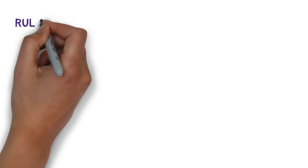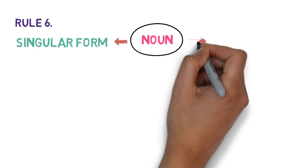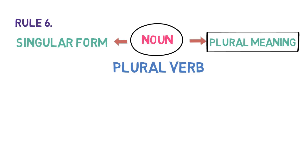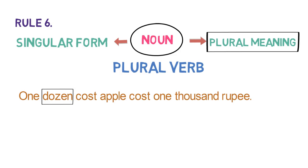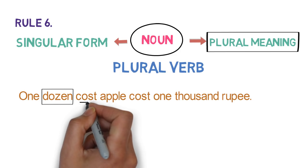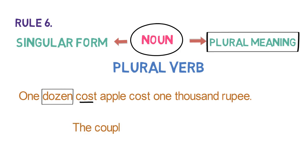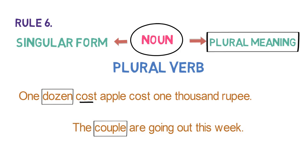Rule number 6 says: some nouns which are singular in form but plural in meaning take a plural verb. For example, 'One dozen apples cost 1000 rupees.' The word dozen is in singular form but plural in meaning, so we use plural verb COST. Another example: 'The couple are going out this week.' The word couple is in singular form but plural in meaning, so we use the verb ARE. So this is Rule 6.